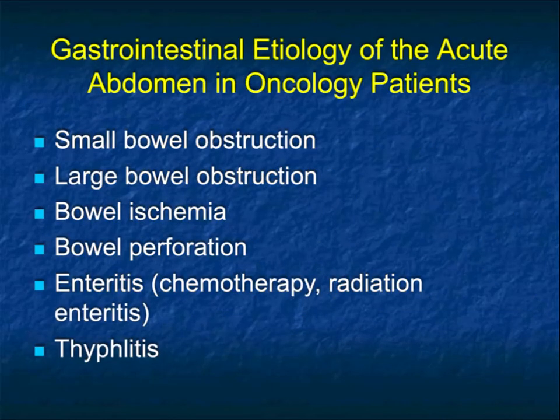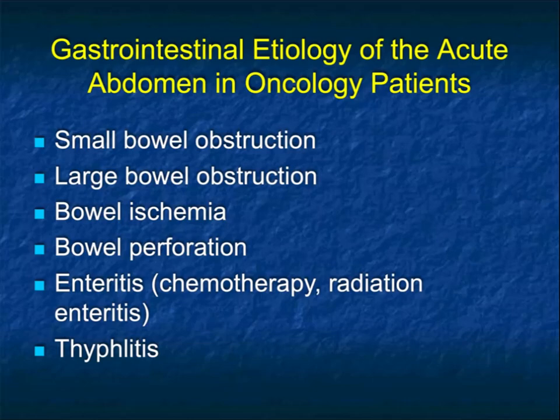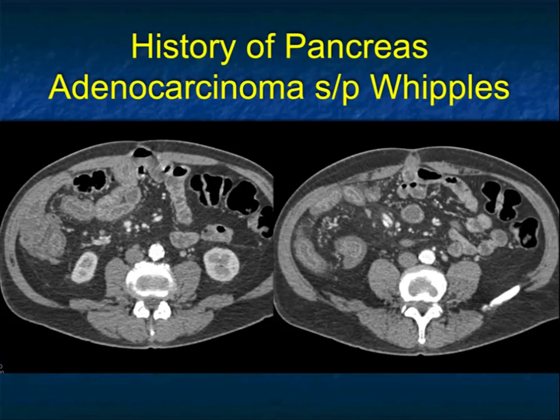When you think about acute abdomen in the oncology patient, there are many causes: small bowel obstruction, large bowel obstruction, ischemia, perforation, typhlitis when it involves the cecum, and also enteritis. Think chemotherapy, think radiation therapy, and think graft-versus-host disease.